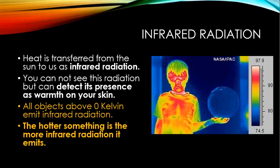Infrared radiation: heat is transferred from the sun to us as infrared radiation. You cannot see this radiation but can detect its presence as warmth on your skin. All objects above zero degrees Kelvin emit infrared radiation. The hotter something is, the more infrared radiation it emits. On the right you've got an infrared camera which shows how much infrared radiation has been emitted by a particular object.